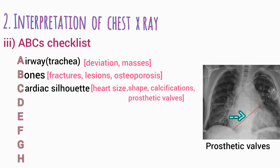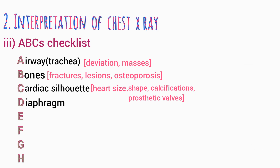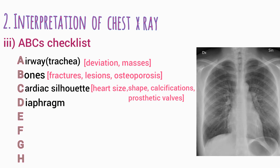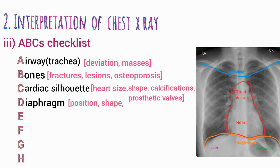D is for diaphragm. The right hemidiaphragm sits two to three centimeters higher than the left due to the liver. Check the position of the diaphragm, then the shape — it is normally dome-shaped but can become flattened in some pathologies.